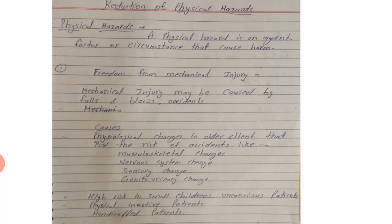How can we prevent physical hazards? First, how can we prevent mechanical injury? Mechanical injury may be caused by fall, blow, or accident.